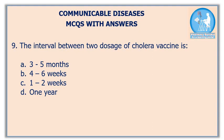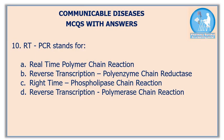Ninth question: the interval between two doses of cholera vaccine is — option A: three to five months, option B: four to six weeks, option C: one to two weeks, option D: one year. The correct answer is option B: four to six weeks. Tenth question: RT-PCR stands for — the correct answer is option D: Reverse Transcription Polymerase Chain Reaction.